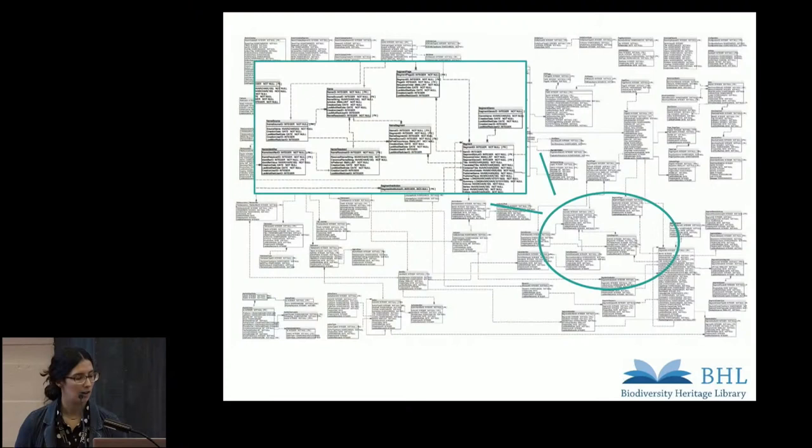This is a look at the current BHL data model. This model is organized in tables and stored in a relational database. This magnified insert that you can maybe kind of see here is about the scientific names in BHL, and I'm going to talk a little bit more about how those are indexed out of the text and what BHL is currently doing to link out to other biodiversity informatic places.